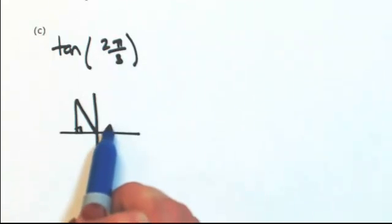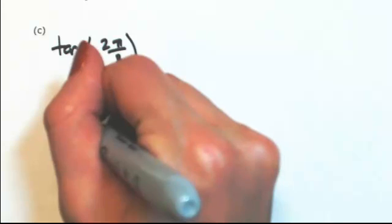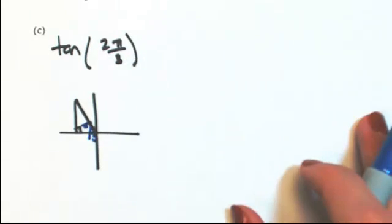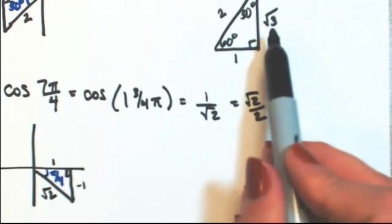Okay, so if this is 2 thirds of a pi, then I've got 1 third pi left. So that angle is pi over 3, or 60 degrees. So if I look back at my 60 degree triangle, the opposite is square root of 3. So the opposite is square root of 3.